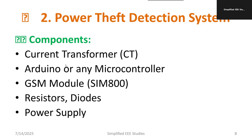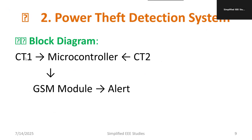An SMS alert can be sent to the electricity board offices. Required components include current transformers to measure current, an Arduino or microcontroller, a GSM module such as SIM800, resistors, diodes, and a power supply for the circuit. The microcontroller acts as the control device; current measurements from transformer 1 and transformer 2 are fed to the GSM module to generate an alert if theft is detected.